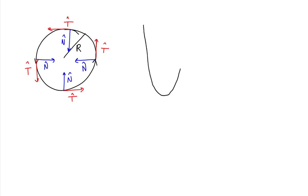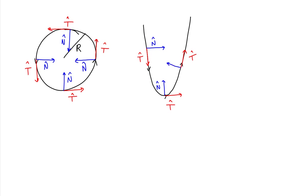Let's say we have a parabola. If we look at the unit tangent vector at various points on this parabola, we know that this unit tangent vector is tangent to each of those points. The principal unit normal vector is perpendicular to the unit tangent vector at each of these points and points inward towards the inside of the curve.